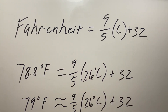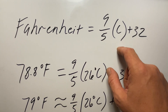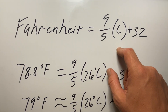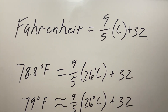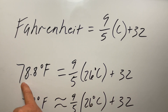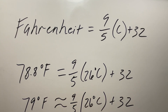Here is the formula for converting Celsius into Fahrenheit: Fahrenheit equals 9 fifths times the degrees Celsius plus 32. In this example, 26 degrees Celsius converts accurately to 78.8 degrees Fahrenheit. I'm going to show you how to do that, as well as a very close approximation you can do quickly in your head. Let's get started.